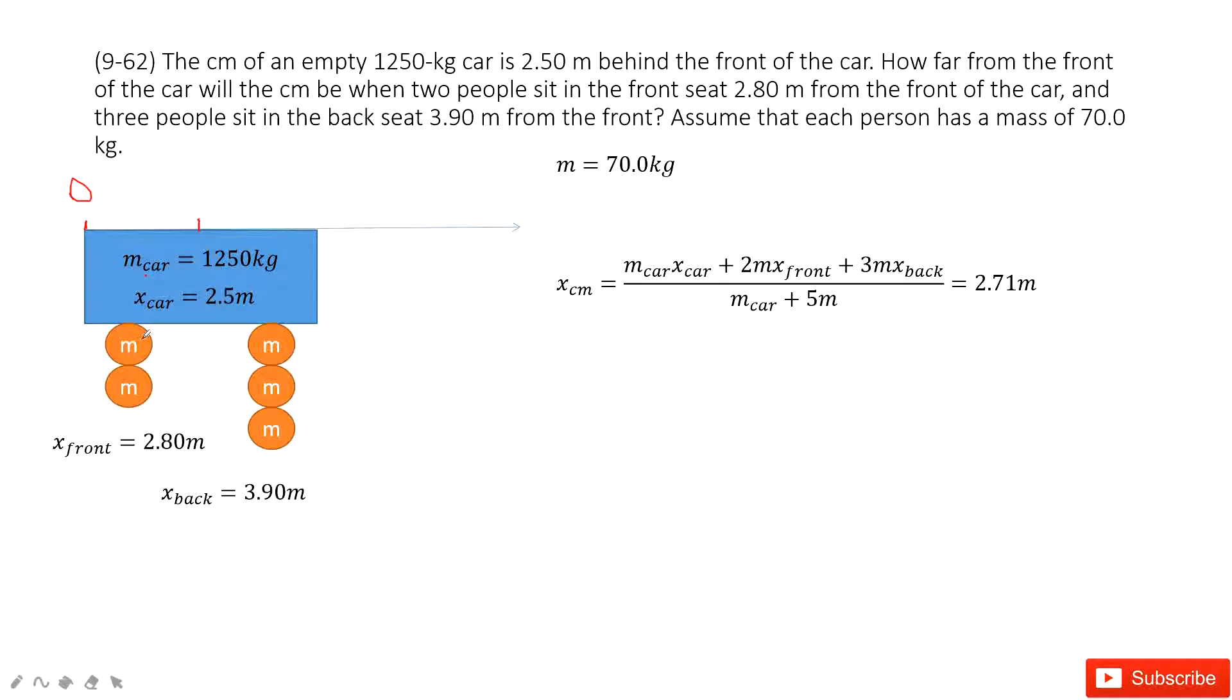And on the car we have 5 people. The 2 people just sit at the front of the car which makes the distance 2.8 meters. And another 3 people sit at the back of the car which makes the distance 3.9 meters.